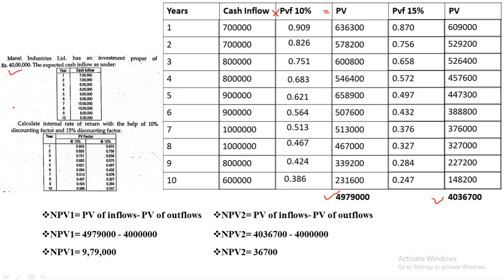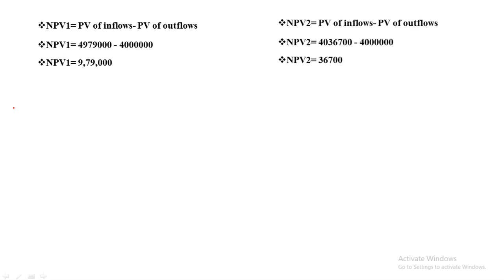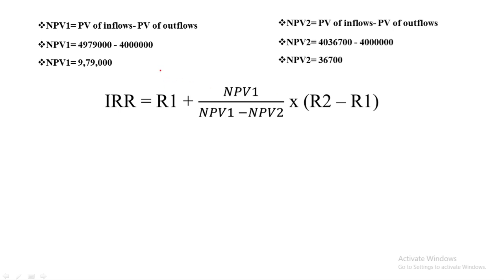Now remember, to substitute values into the formula we need four amounts: the lower PV factor R1 = 10%, the higher PV factor R2 = 15%, NPV1 = 9,79,000, and NPV2 = 36,700. These are the four values required. Let us now substitute them into the formula.